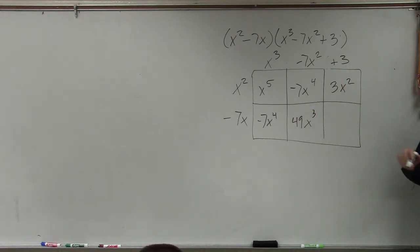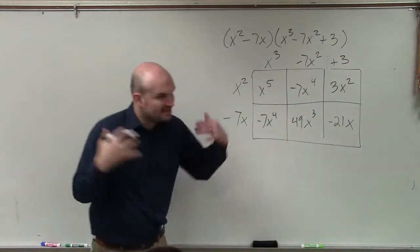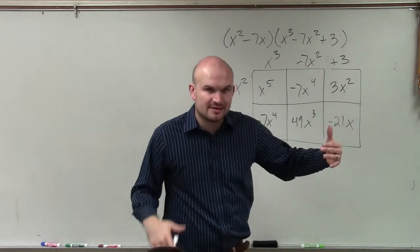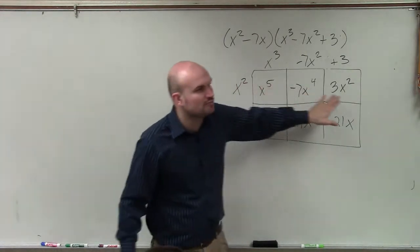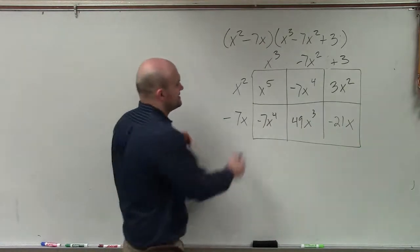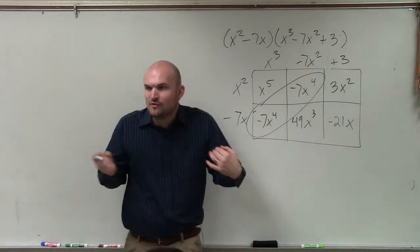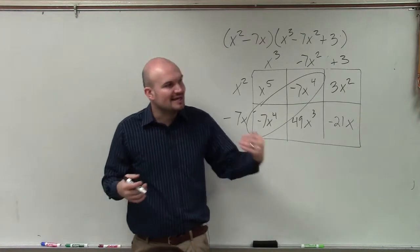And then we have 3 times negative 7x, which would be a negative 21x. Now, what's important about this, the reason why I like this is because now you have every single product, every single monomial organized. However, you guys see that these two have the same terms, right? They both have x to the fourth. So I can combine them.